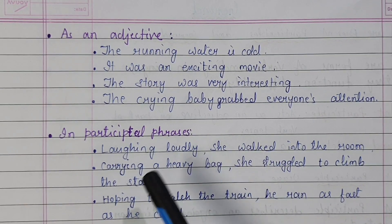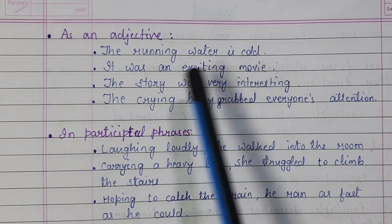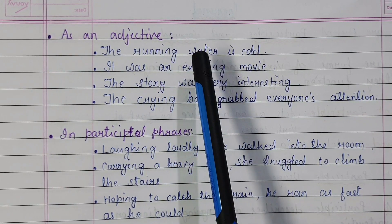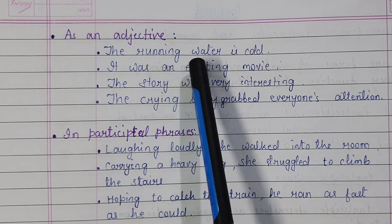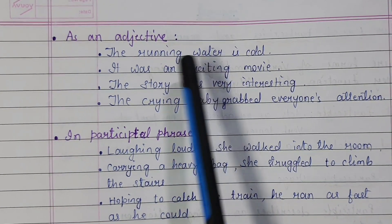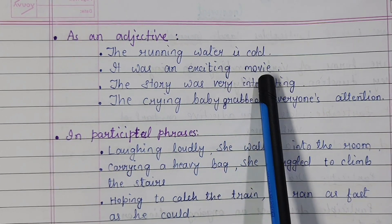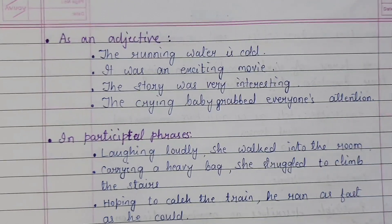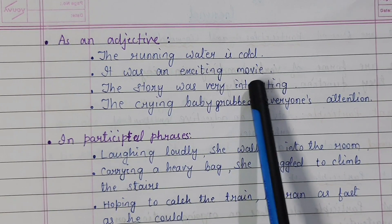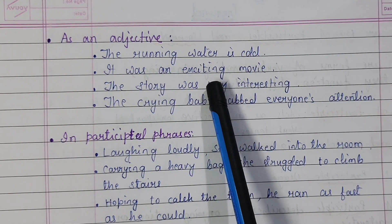As an adjective, we use present participle. For example: 'The running water is cold.' Running describes water. Water is a noun. When a word describes a noun, that is an adjective. So running is an adjective but it is present participle. 'It was an exciting movie.' Movie is a noun; exciting describes movie, says more about it. So exciting is present participle, acting as an adjective.